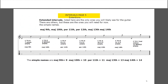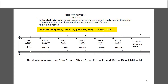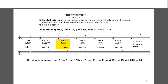Intervals page five - the extensions. Extended intervals listed here are the only ones you'll likely see for the guitar. The simple names: a major ninth is simply called nine, a major tenth is ten, a perfect eleventh is eleven, a perfect twelfth is twelve, major thirteenth is thirteen, and a major fourteenth is fourteen. C to D past the octave - seven whole steps - is a major ninth. C to E, eight whole steps, is a major tenth. When you hear Paul McCartney's Blackbird, that is built in tenth intervals, and a lot of classical guitar is counterpointed melody built with a bass note and a melody in tenths - that is totally common.